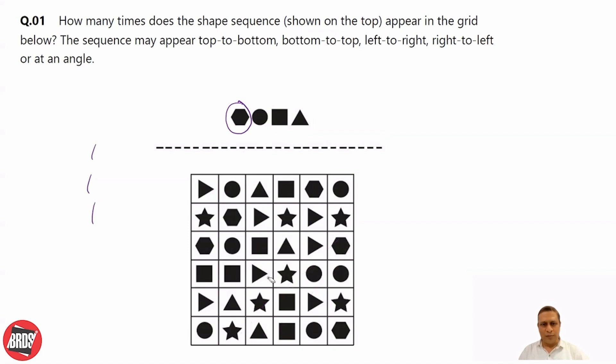We move further. Hexagon, and then hexagon is here. Circle, square, triangle here - yes. And then there is no hexagon. So the answer to this question is there are four sequences of the given shape.